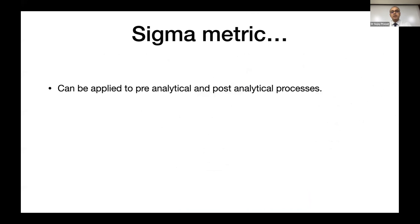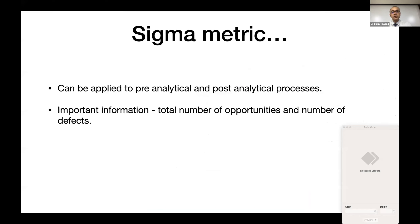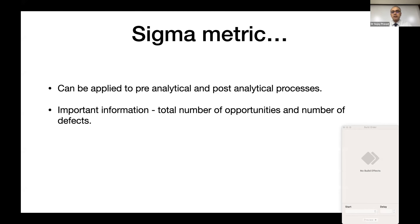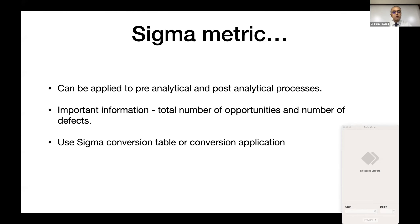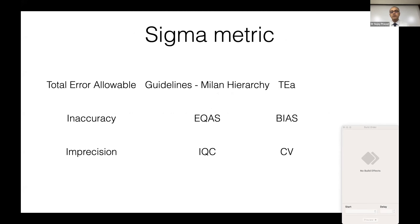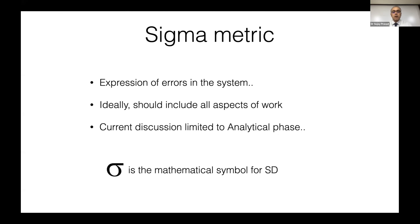Sigma metric can be applied in pre-analytical and post-analytical processes. It's important to calculate the total number of opportunities in an activity and to record the number of defects — if errors are not recorded, we miss opportunities and cannot measure sigma. Use the sigma conversion table or sigma application to calculate sigma, and identify areas of low sigma, because those become your immediate action points.